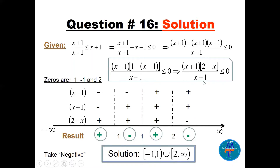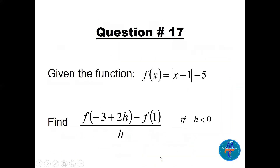The zeros are minus 1, 1, and 2. Set up the table of signs from lecture 25 with all three factors. Choose test numbers in each interval and determine signs. We need the expression less than or equal to zero — that's negative between minus 1 and 1, and between 2 and infinity. Since x = 1 makes the denominator zero, it must be an open bracket in the final answer.